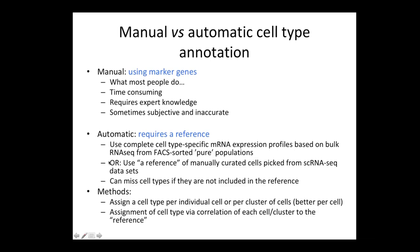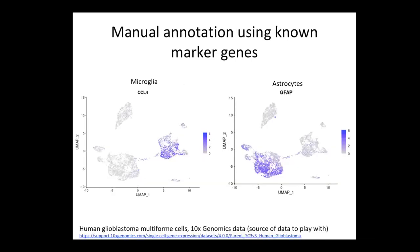The method assigns a label to every unknown cell in your dataset. This can be done either per cell or per cluster — you have the choice with SingleR. The way it works is by using a correlation of the different single-cell expression profiles to the profile of your reference.